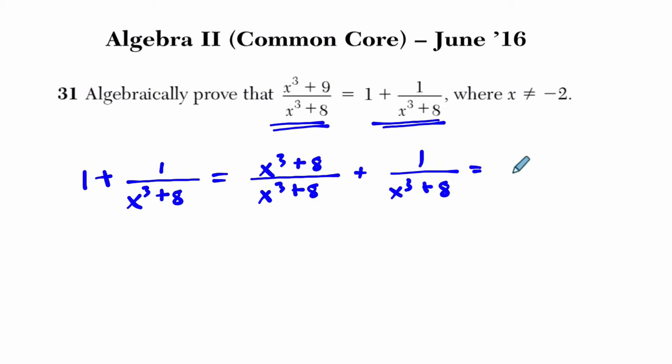When we add our fractions, we just add those numerators, and that's x cubed plus 8 plus 1 or plus 9 over x cubed plus 8. And we're done, right? So we show that the two sides are equal only by manipulating the right-hand side.